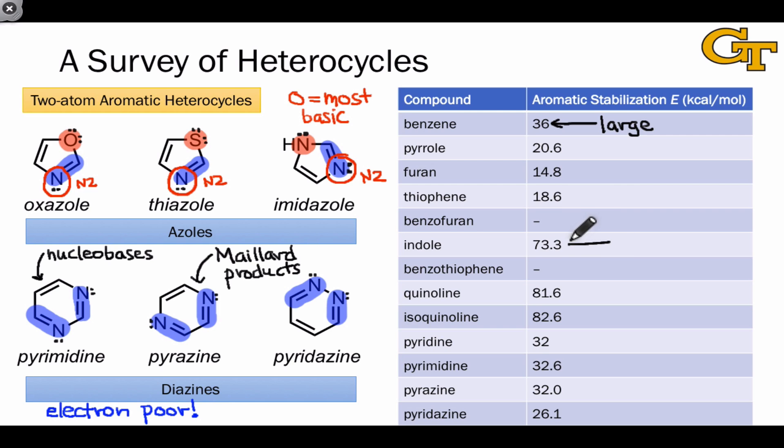The second thing to notice is that the fused aromatic heterocycles, at least the ones that we have data for, tend to have much larger aromatic stabilization energies than the monocyclic rings. Largely, what's happening here is an additive effect, where indole, for example, enjoys stabilization from both its pyrrole ring and the fused benzene ring.